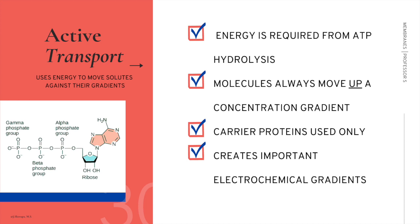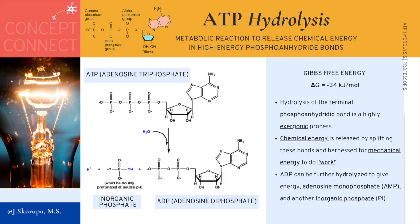Now we will cover active transport. The rules for active transport are: it requires energy from ATP hydrolysis, molecules always move up or against a concentration gradient, all proteins involved are carrier proteins, and active transport creates important electrochemical gradients.